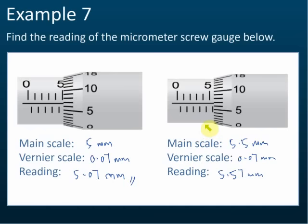I showed this example because many students make a mistake — they do not see the 0.5mm line here. They go straight to 5.0 for the main scale and then add 0.07 for the thimble scale, giving 5.07. That is not correct. You must be careful about this second 0.5mm scale.